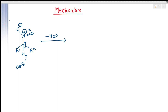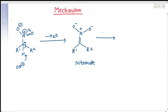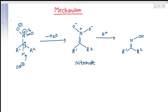The compound formed is known as the nitronate. This nitronate is then attacked by H plus, giving R1 and R2 with a double bond and two OH groups, along with a positive charge. Next, a water molecule with its lone pair of electrons attacks here, and this bond shifts accordingly.